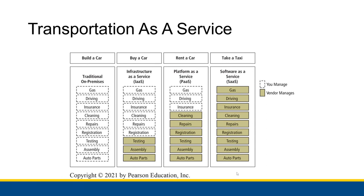Then there's renting a car. There would be a couple of vendors in play here — the car vendor that actually builds the car, tests it, and assembles it; and then the car rental company, which would take care of registration, repairs, and cleaning. You as a consumer would still take care of the insurance, the driving, and the gas. That would be platform as a service. The platform itself — the car — is completely taken care of. You're just putting in the work to actually use that platform, actually drive it somewhere, and paying for the insurance that goes with driving that car.